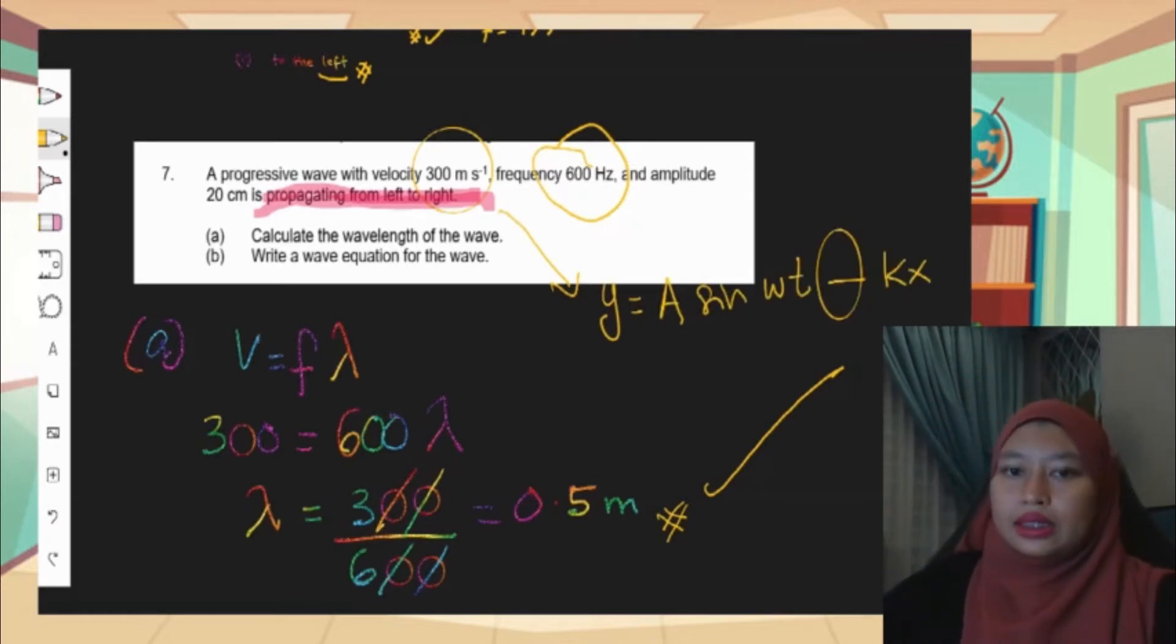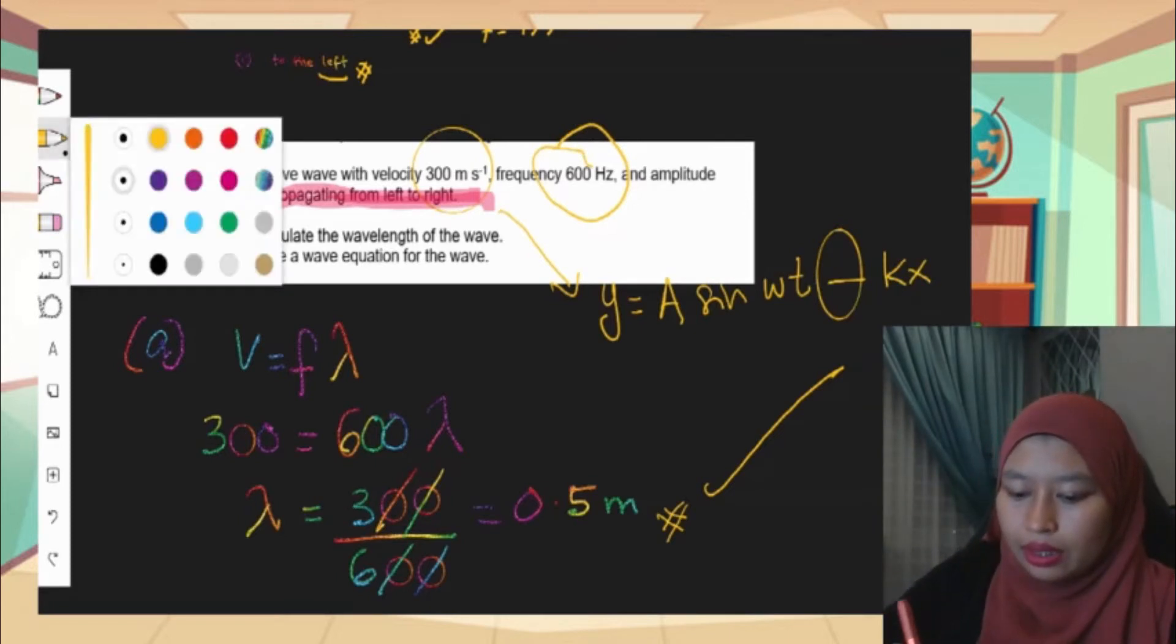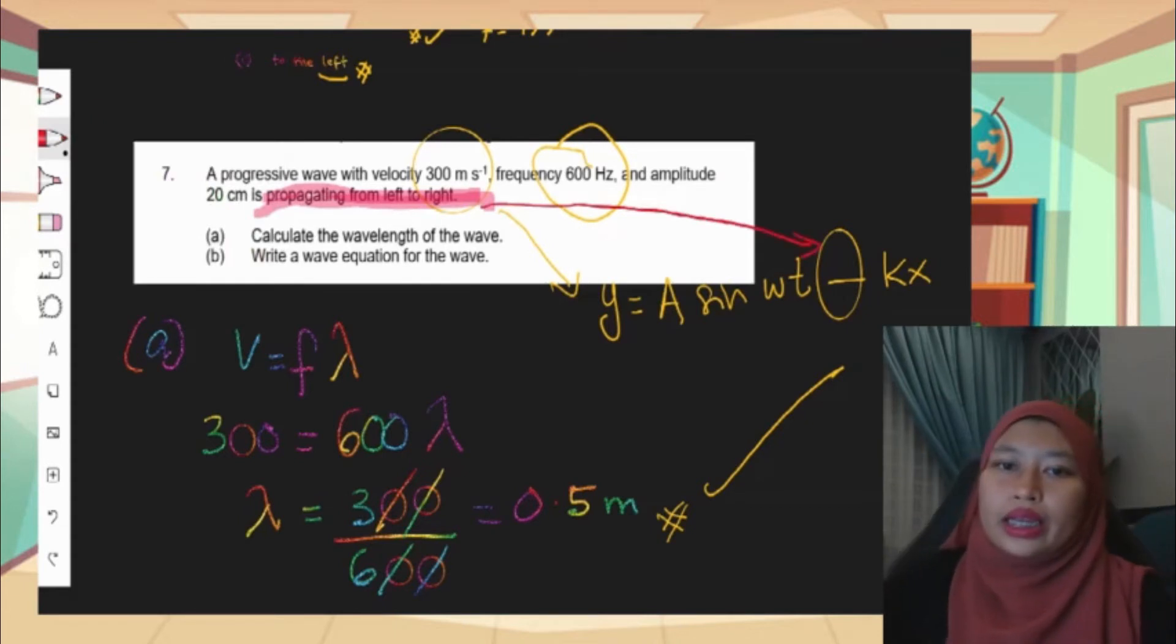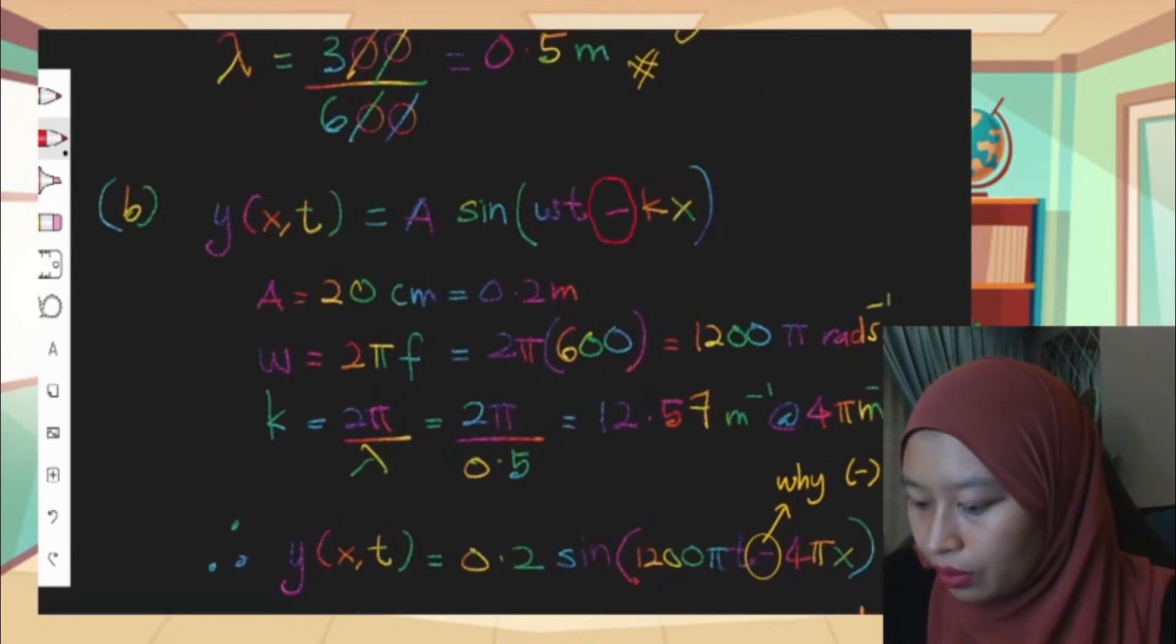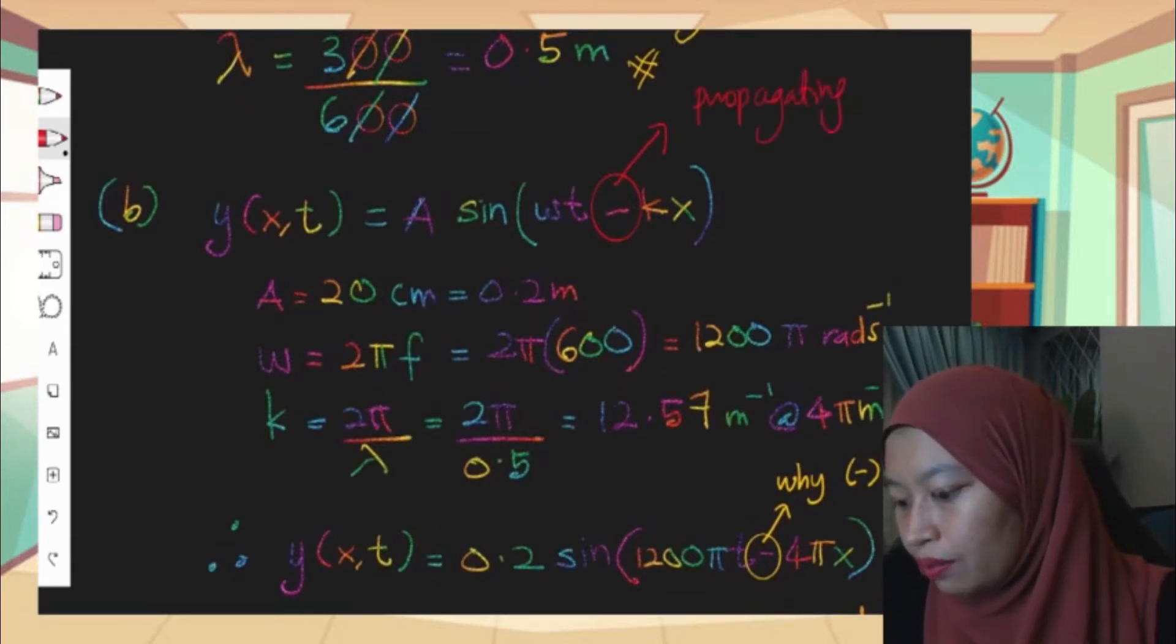What it means when we want to write the wave equation, it will become y equals A sine omega t minus kx. Why minus? Because the question states propagating from left to right, therefore we know the equation will be minus kx. That's the keyword here.